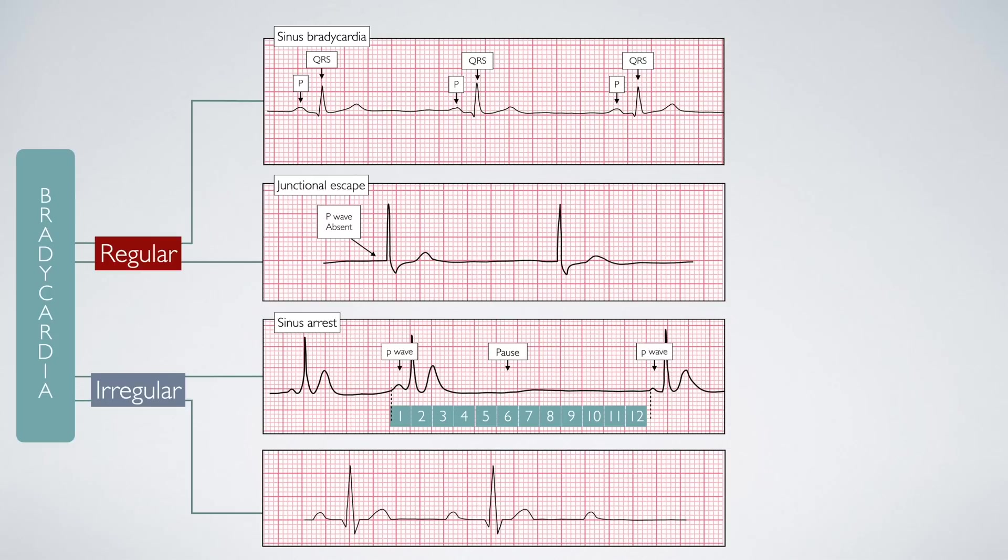Finally, an irregular rhythm where there are P-waves followed by no QRS complex is likely an atrioventricular heart block, either 2nd degree or 3rd degree. But don't worry, we'll cover the heart blocks in more detail soon.